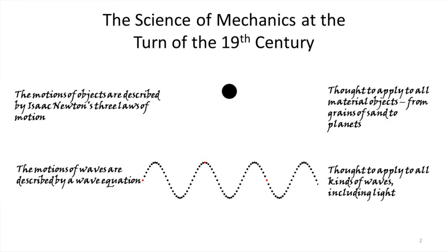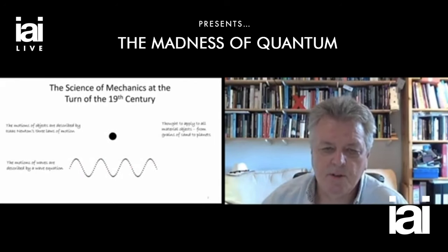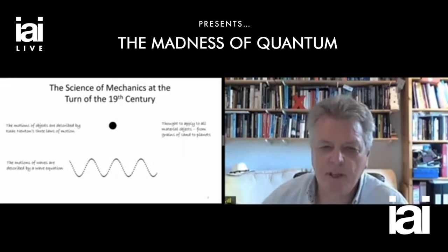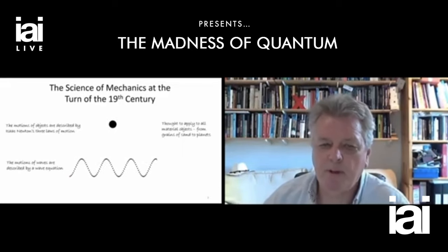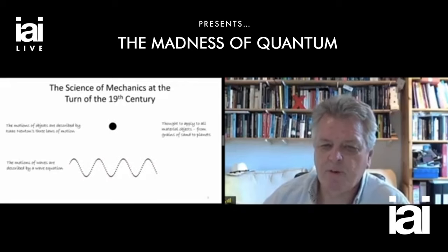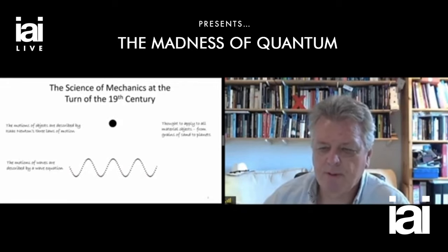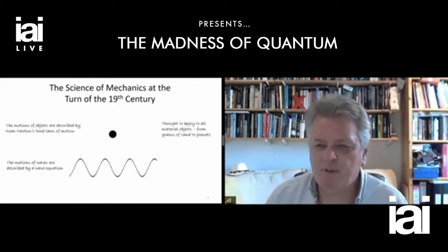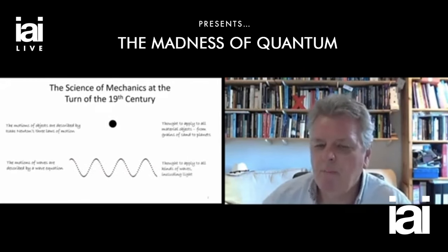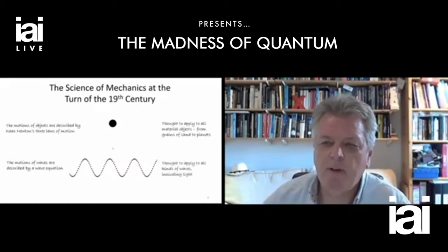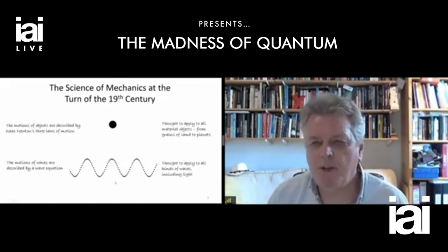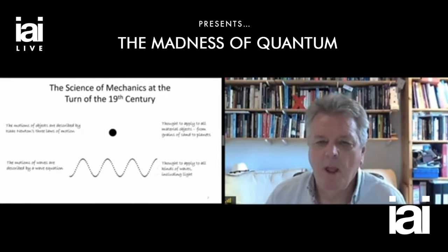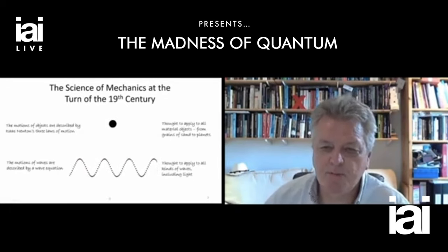But there was another kind of motion that required a different set of principles and equations — the motion of waves, described by a wave equation. What's interesting about this is that the wave appears to be moving from left to right, but the individual points in the wave are actually only moving up and down, as you can see by tracing the motions of those red dots. This kind of description was thought to apply to all kinds of waves, including the phenomenon of light. So we had one set of equations to describe the motions of objects and another set to describe the motions of waves.